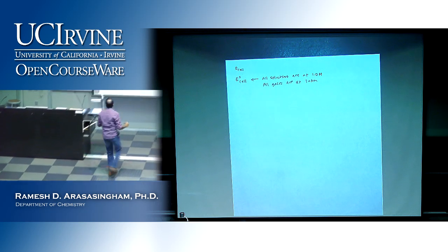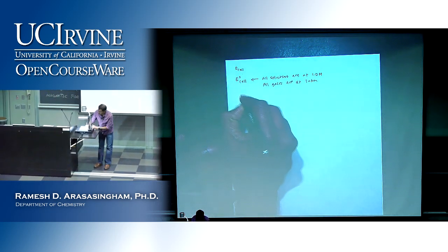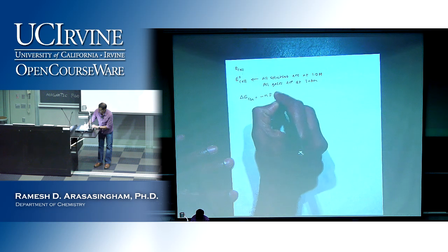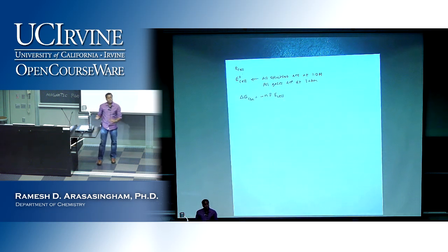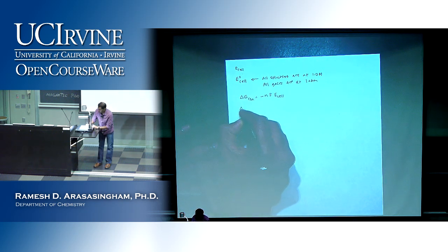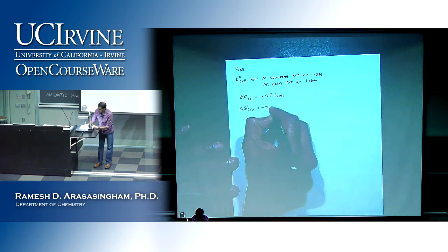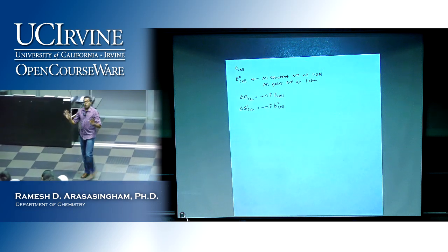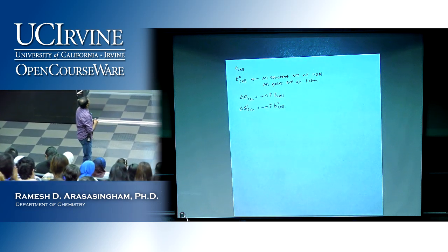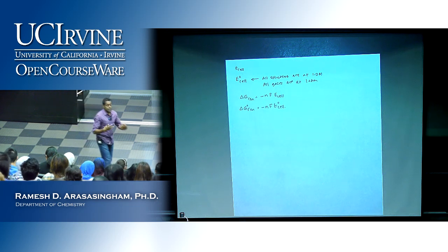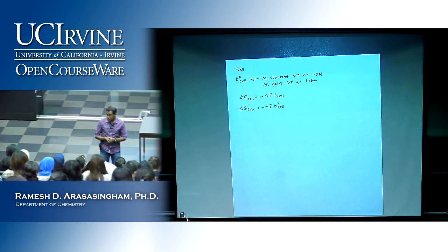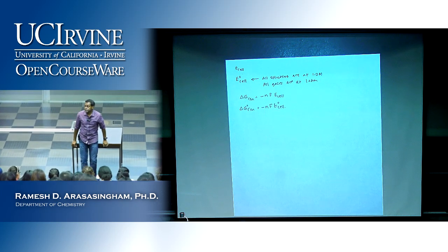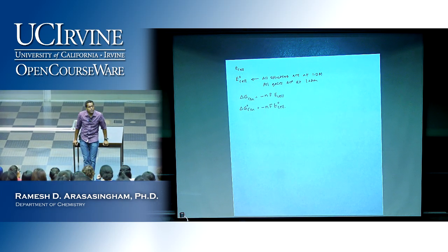We finished up by saying that the relationship between ΔG of the reaction is given by ΔG = -nFE_cell. Under non-standard conditions, the free energy change will be given by E_cell; under standard conditions, by E°_cell. Since voltaic cells take advantage of a spontaneous reaction, ΔG is always negative, which means the cell potential comes out to be positive.